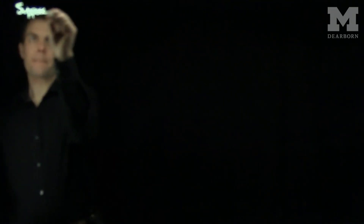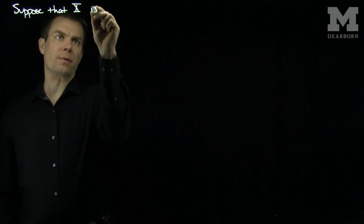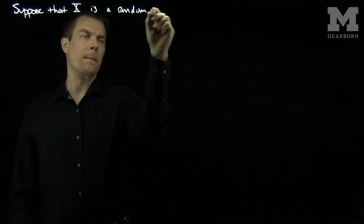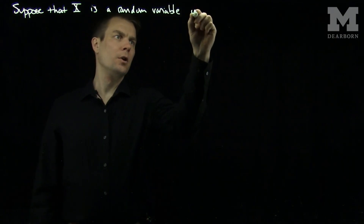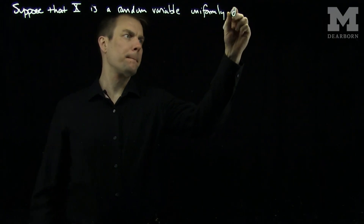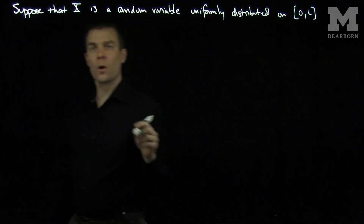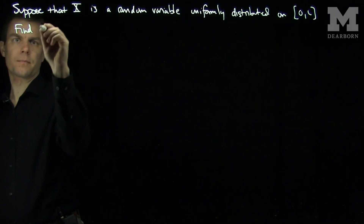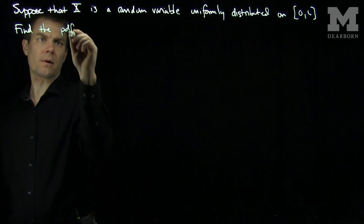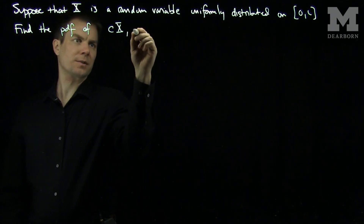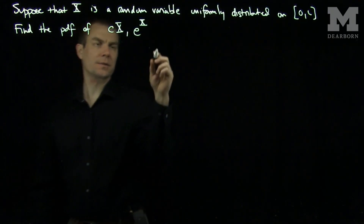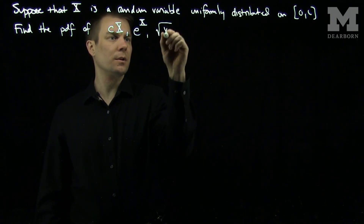Hello students. In this video we'll see how to find the PDF of a transformation of a random variable whose PDF is known. Let's suppose that X is a random variable uniformly distributed on the interval 0 to L. What we'd like to do is find the PDF of c times X, e to the X, and the square root of X.